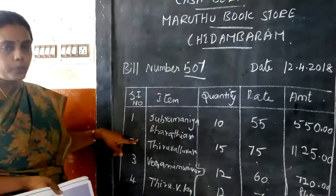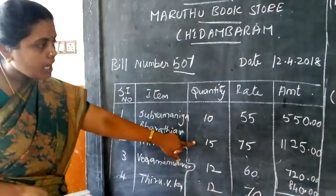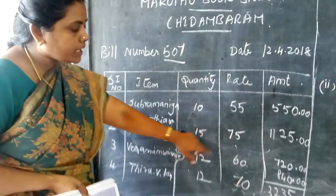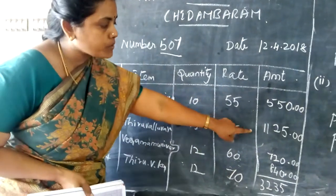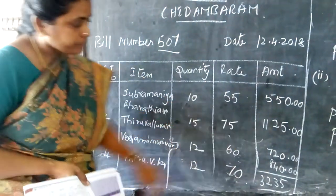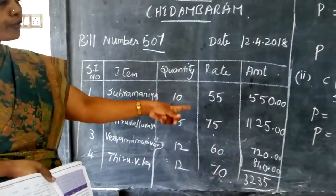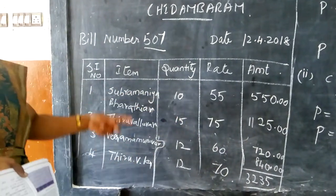And then second one, Thiruvalluvar. It is 15. What is the rate? It is 75 rupees. So 15 into 75 is 1125. You have to write in terms of rupees as well as the paisa.